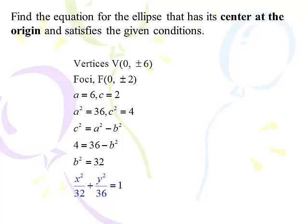So a is 6, c is 2, so a squared is 36, and c squared is 4. So 4 equals 36 minus b squared, so b squared is 32. Because the vertices are on the y-axis, I'm going to put a squared underneath the y, and I'm going to put b squared underneath the x. And we got that from the fact that the vertices were at 0 plus or minus 6, which is on the y-axis.